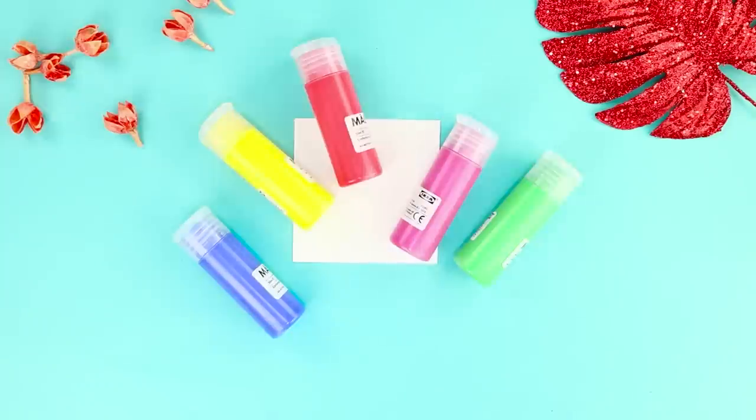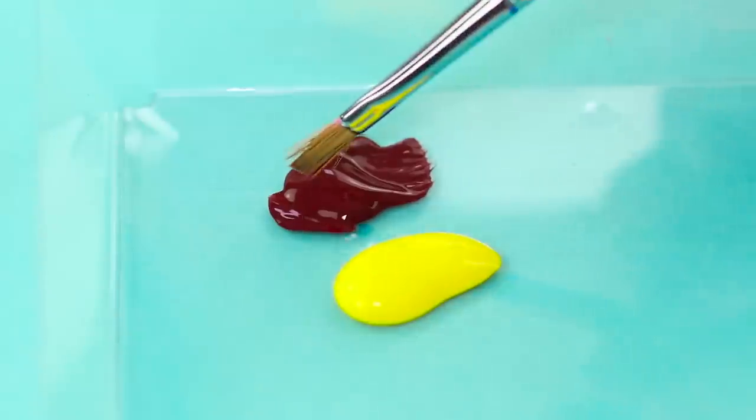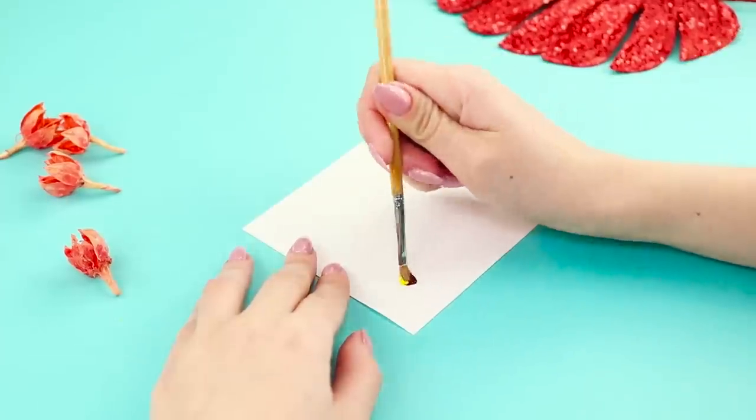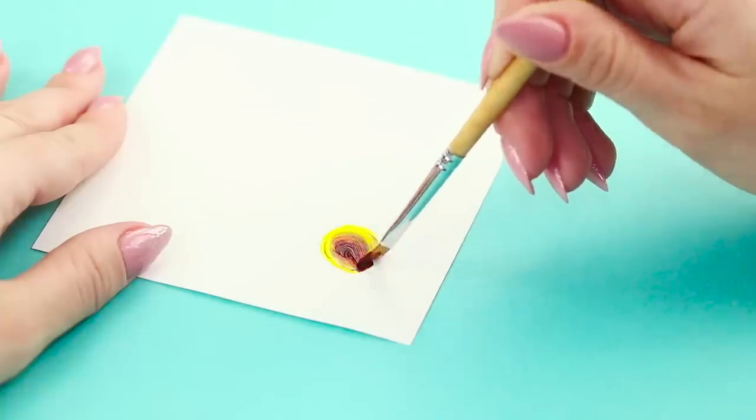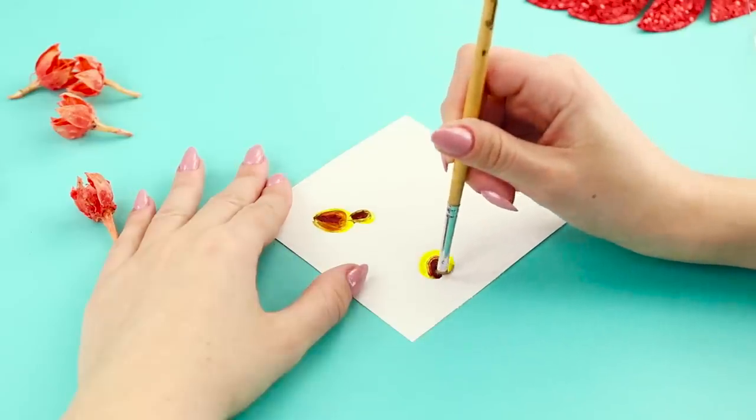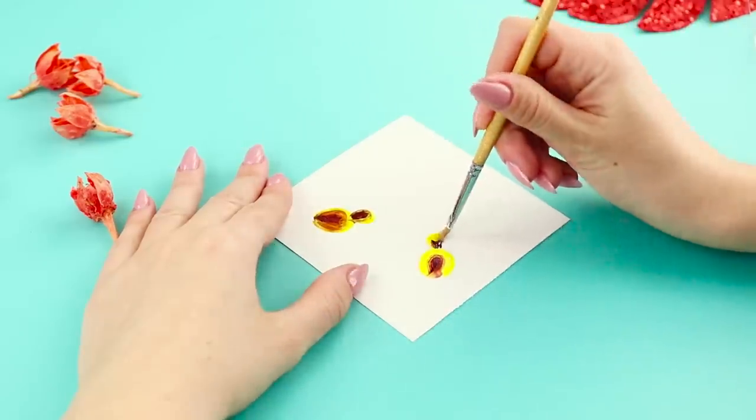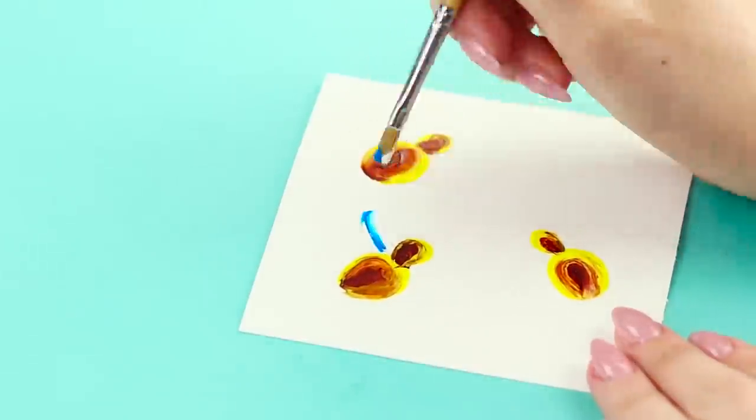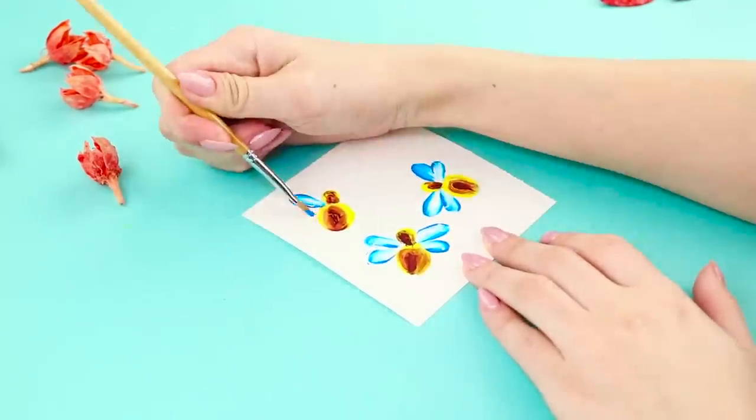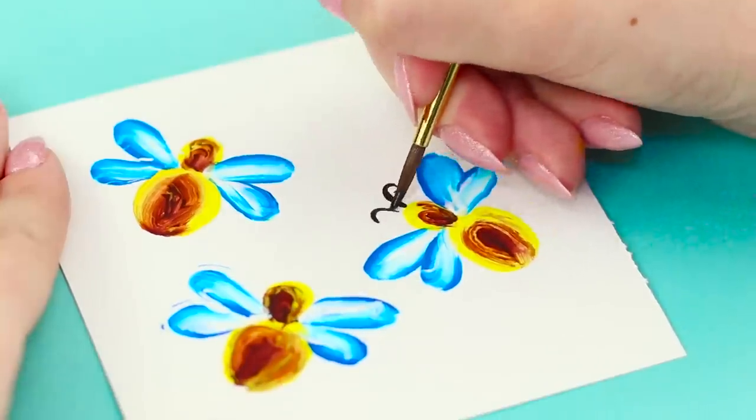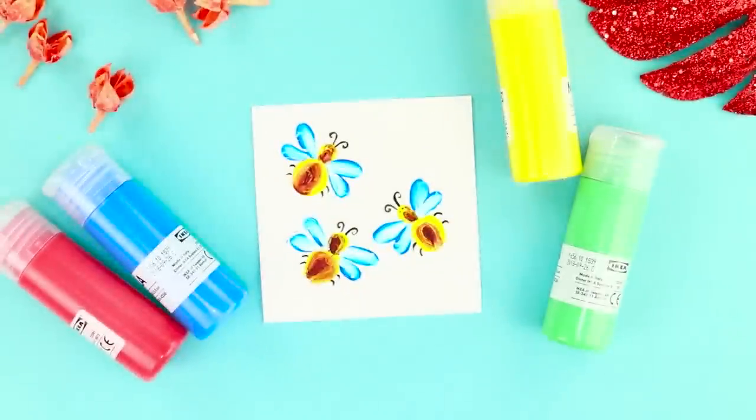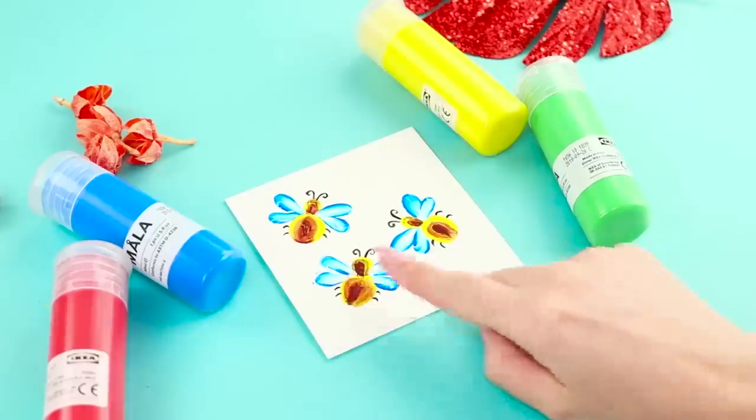And now take gouache. Pour a drop of yellow and brown onto the palette. Dip the edges of the brush in both colors without mixing. Draw circles on the paper. Hold the brush at one point and carefully twist it around its axis. Add the wings with a mixture of white and blue paints. Now these are not just circles, but real bees! Finish them with black antennae. Add legs! Did you hear that pleasant noise? Those are field workers buzzing!